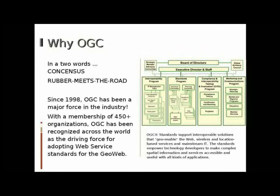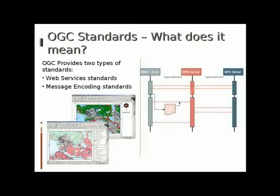These other standards bodies include OASIS, ISO, and IETF, just to name a few. So what does it mean to be an OGC standard? OGC takes the view that vendors' implementations are black boxes. OGC only cares about what happens at the interface of these black boxes, and what messages are passed across the wire between them. In this web-enabled era, the interfaces that OGC defines are exposed as web services, so OGC defines web service standards and message and encoding standards.